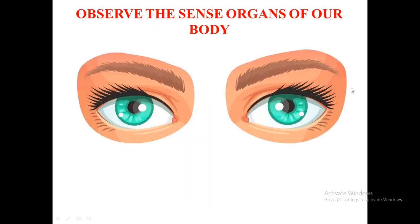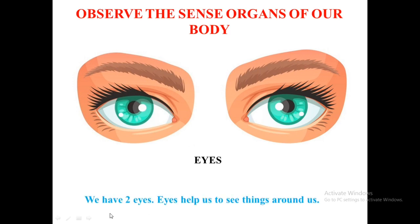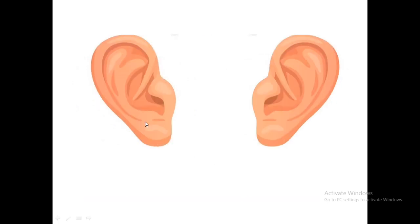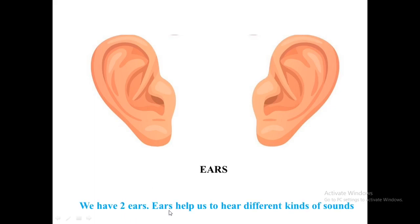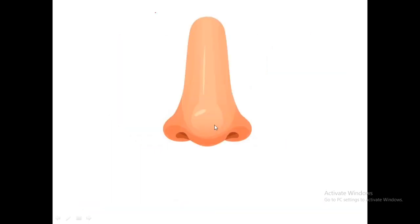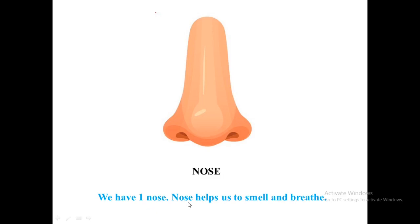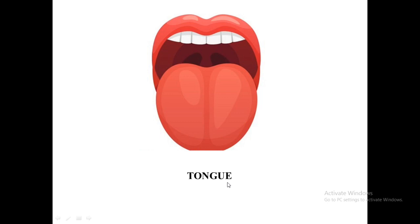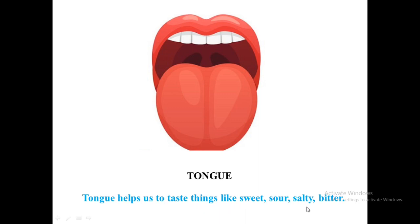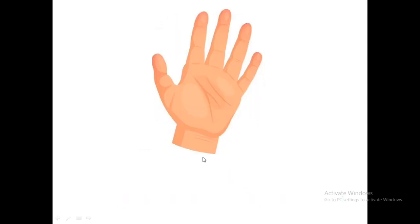Now we will learn about our sense organs. These are our eyes — we have two eyes. Eyes help us to see things around us. These are our ears — we have two ears. Ears help us to hear different kinds of sounds. This is our nose — we have one nose. The nose helps us to smell and breathe. This is our tongue — we have one tongue. The tongue helps us to taste things like sweet, sour, salty, and bitter.